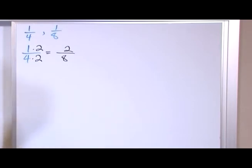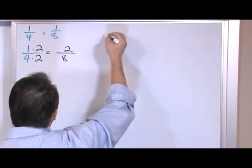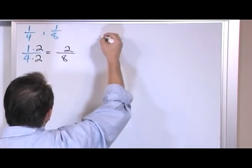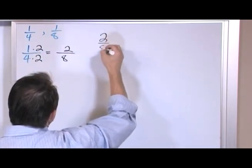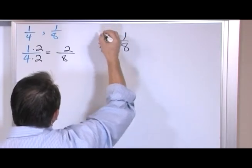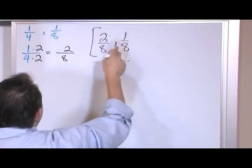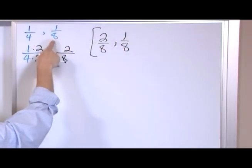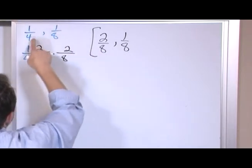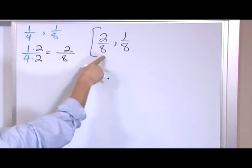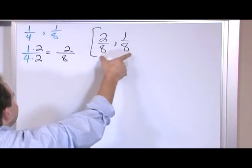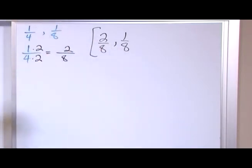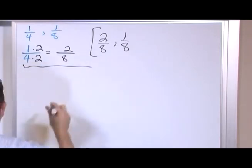If I were going to rewrite these fractions in terms of a common denominator, it would be two-eighths and one-eighth. I didn't have to mess with the second fraction in this case — I left it alone, but I changed the first one. These two fractions represent the same exact stuff as the original two that we had.